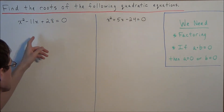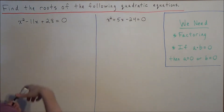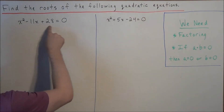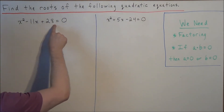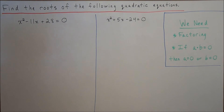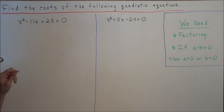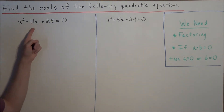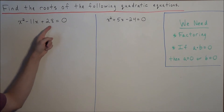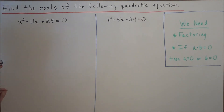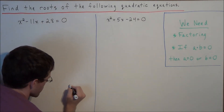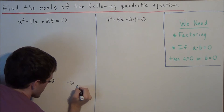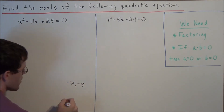So now when we start this, we're going to begin by factoring this quadratic expression here: x squared minus 11x plus 28. So how can we factor this? Well, we need to find two numbers that sum to negative 11 and multiply to a positive 28. And after a little bit of thought, we'll arrive at negative 7 and negative 4.